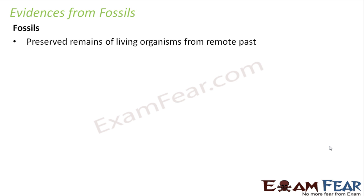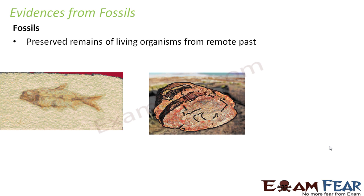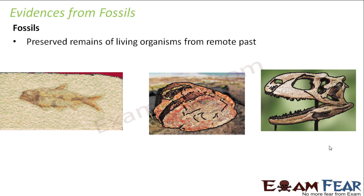A fossil mainly preserves only a portion of the dead organism — for example, the skeleton, the bone, or the teeth. This picture shows the fossil of a dead fish. This is the fossil of a tree bark. And this is the fossil of the head of a dinosaur.